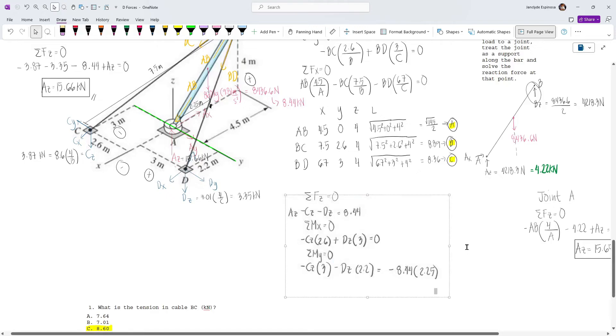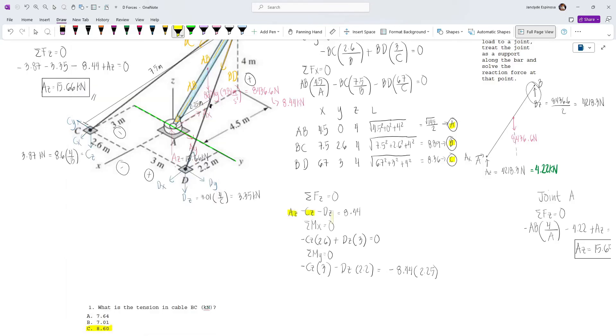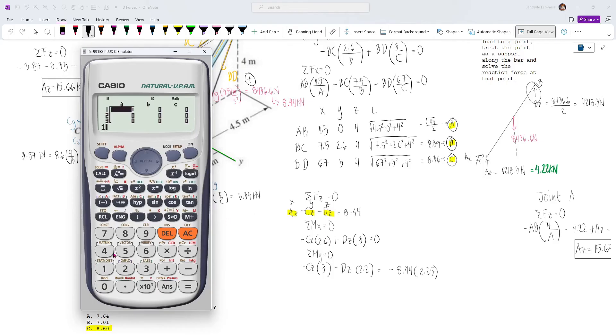Now using our calculators, press mode and then equation and then press 2. AZ will be our X, CZ will be Y, and DZ will be Z. So X, Y, Z for the following variables. Our coefficient of X is 1 for the first equation. And then our coefficient of Y which is B, that's gonna be minus 1. So minus 1 and then another minus 1 for DZ. This is equal to 8.44. And then for the second equation, we have 0 since we don't have a term containing AZ and then we have minus 2.6 and then 3, that's gonna equal 0.